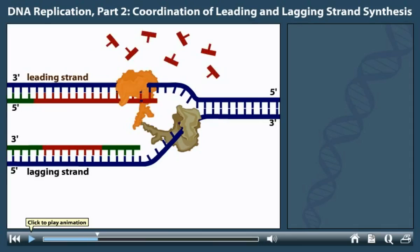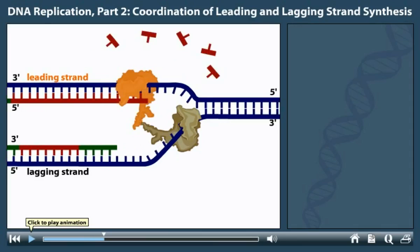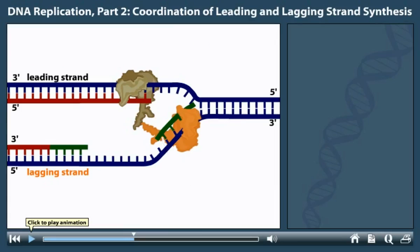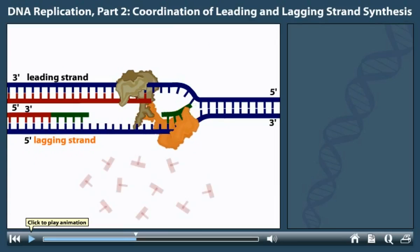The polymerase at the leading strand template remains attached to the DNA, continuously synthesizing the leading strand. The lagging strand polymerase initiates DNA synthesis at the fork from an RNA primer made by a primase complex. The polymerase elongates the lagging strand in a direction opposite the fork but stays bound at the fork.